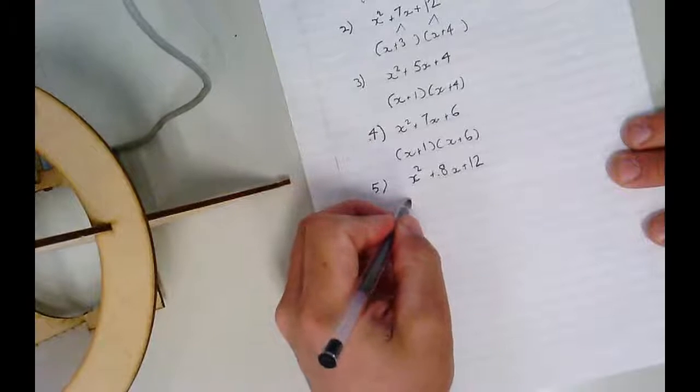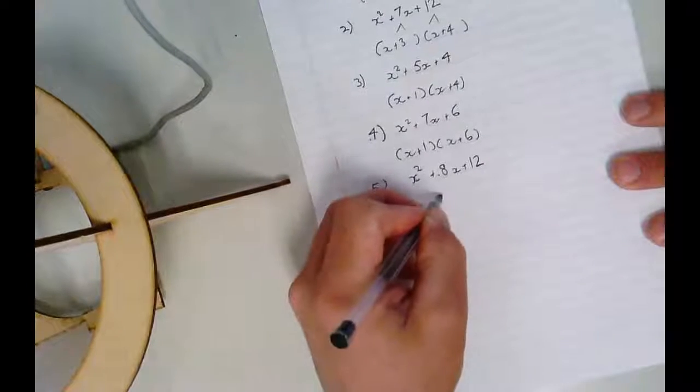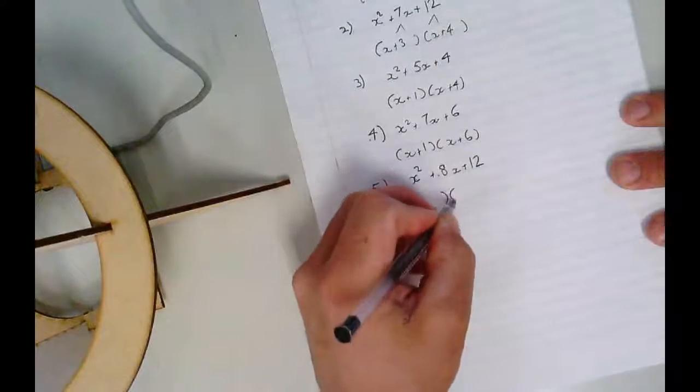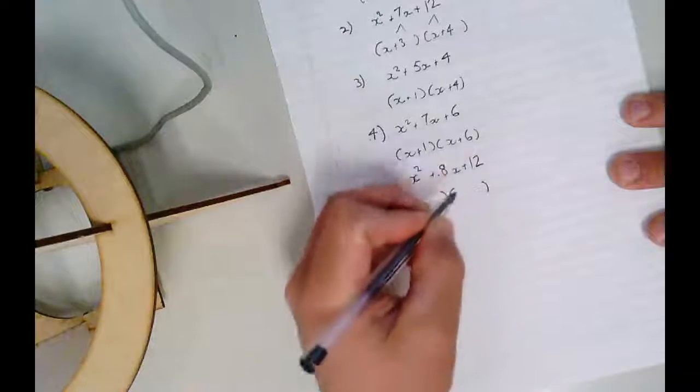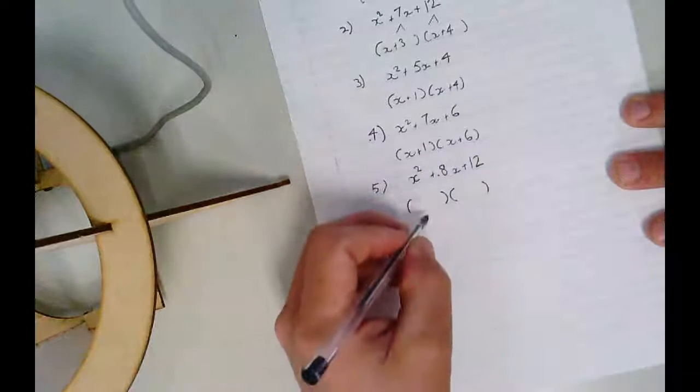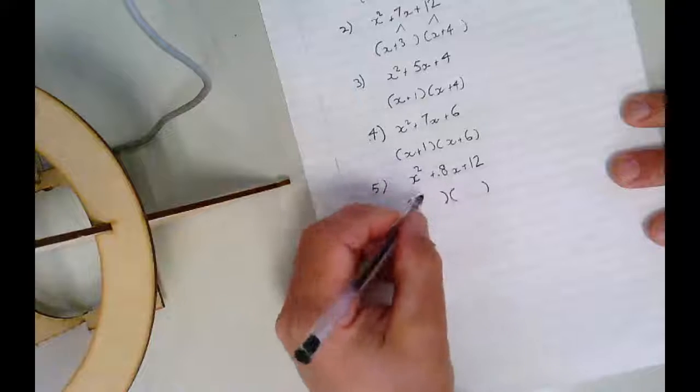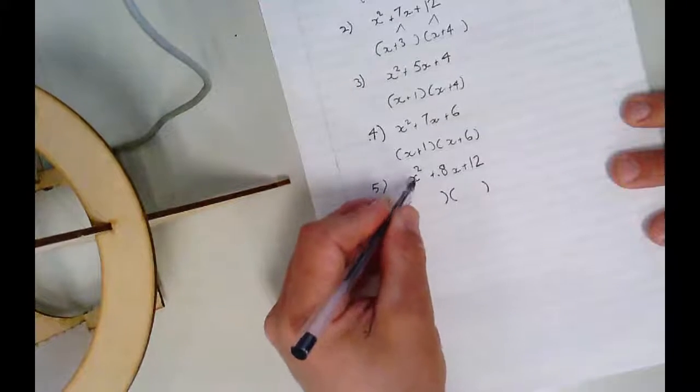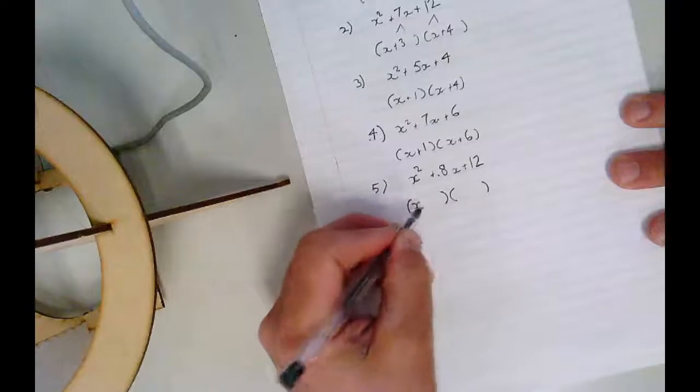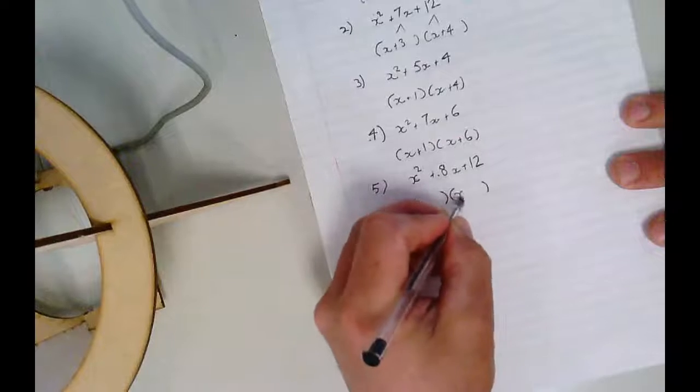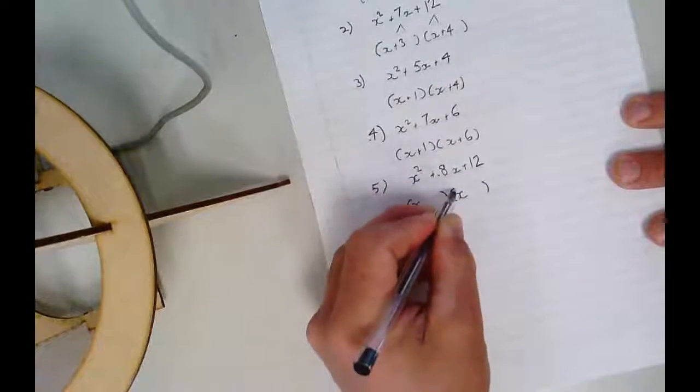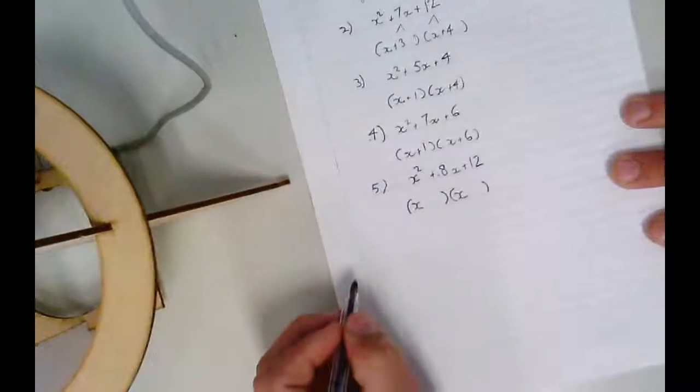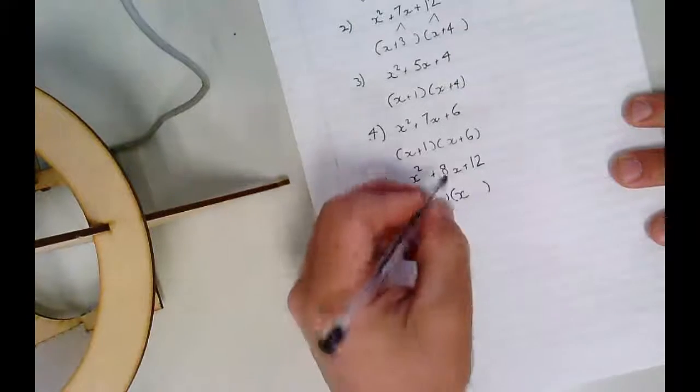Now, we're going to do two brackets that we do FOIL, multiply them together, and it's going to get back to that answer. So we're factorising this answer. So x squared, well that's going to be easy. You can sort that out by putting an x at the front there, x at the front there. x times x will be x squared.